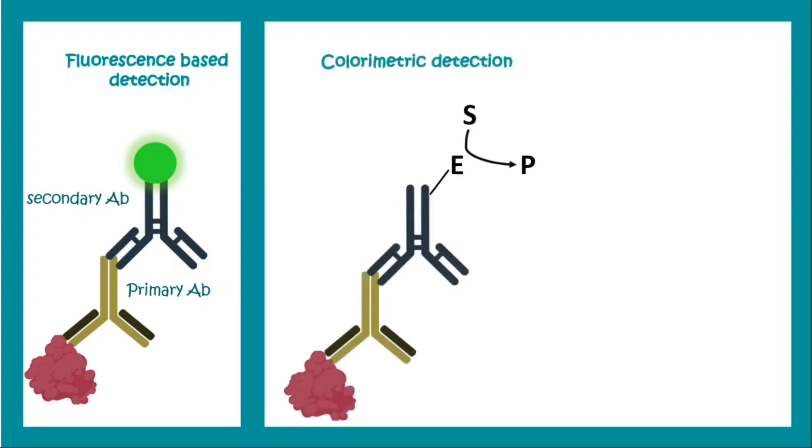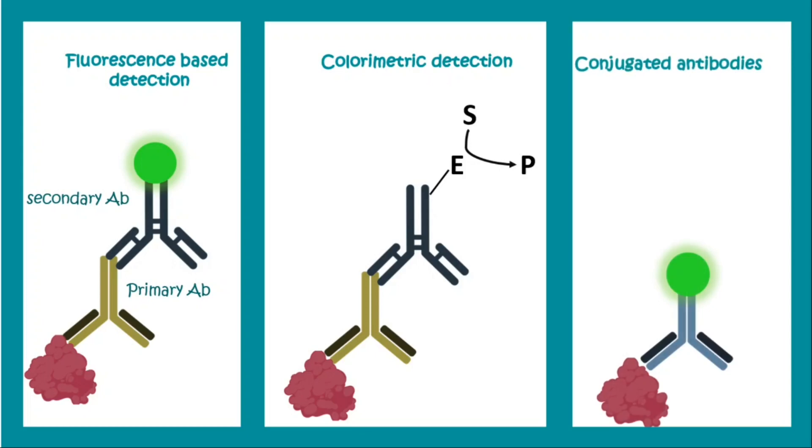In other cases the secondary antibody can be linked to an enzyme which changes a colorless substrate into a colorful product, and in that situation it is known as colorimetric detection. In some other cases the primary antibody itself can contain an enzyme or a fluorescent molecule, but conjugate antibodies are very costly and hence not performed regularly.